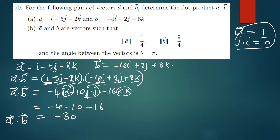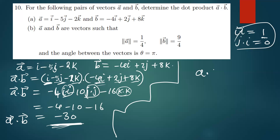This confirms that the dot product of any two vectors gives a scalar — just a number. The dot product can also be written using the formula: a·b = |a||b|cosθ. This formula is mostly used to calculate the angle between two vectors. So a·b equals the magnitude of a times the magnitude of b times cosθ.